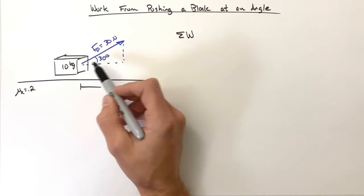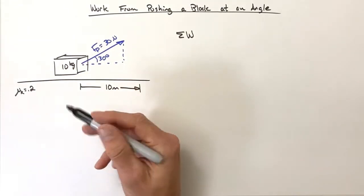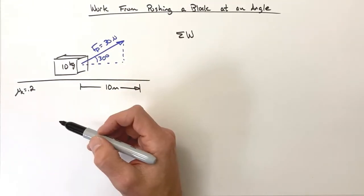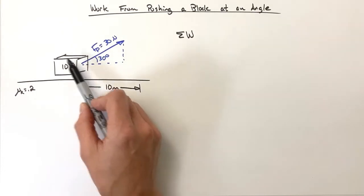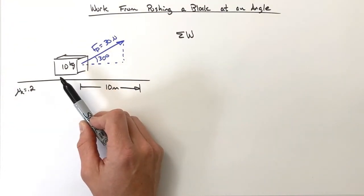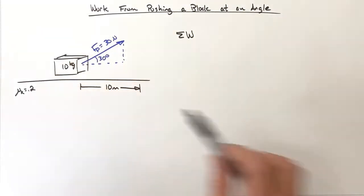By pulling upward at an angle, that's going to affect the forces acting on the block. Just like before, we need to go through and look at the entire free body diagram for this block so we can figure out exactly what forces are doing how much work on the block.